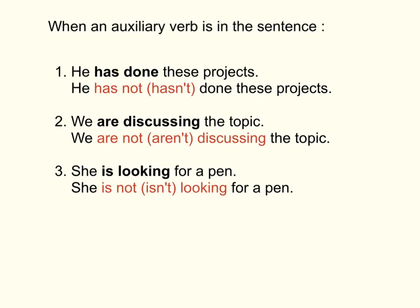When other auxiliary verbs is in the sentence, we put not after the auxiliary verb. 如果是有其他助动词在那句句子里面呢，我们就要找到它出来，然后加个not字下去，就会将那个句子变成否定的了。Number one: He has done these projects. 那他has done，已经做好这一堆的项目了。那个auxiliary verb就是has，那我们将这个变成否定，就是he has not done these projects.